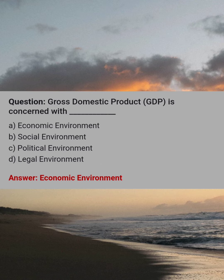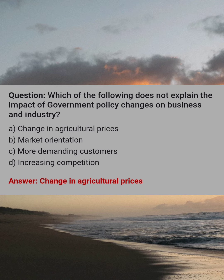Gross domestic product, GDP, is concerned with dash. Answer: A, economic environment. Which of the following does not explain the impact of government policy change on business and industry? Answer: A, change in agriculture prices.